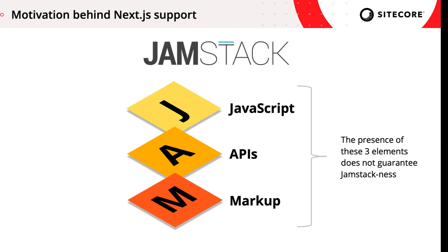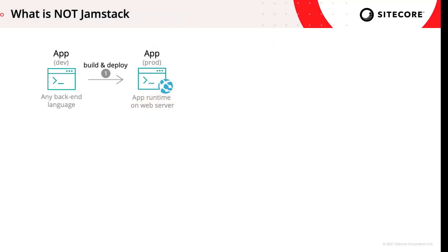Let's look at an example of the former. How does a traditional non-JAMstack site work? We'll start at the beginning of the flow. Here we have our web application. The backend codebase can be C-sharp, Ruby, JavaScript — anything that runs server-side. The implementation language doesn't affect the architecture. The app code is compiled, optimized, and deployed to a web server, where it can process incoming requests.